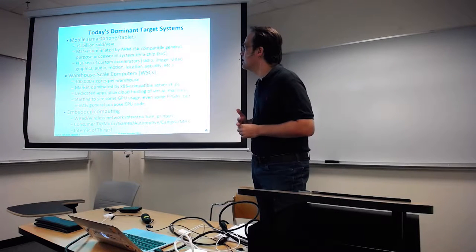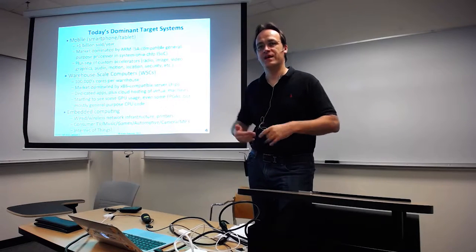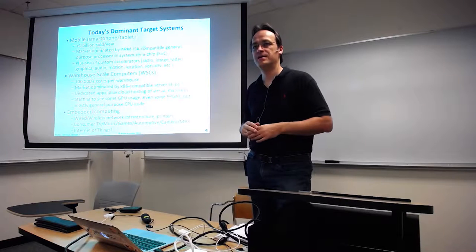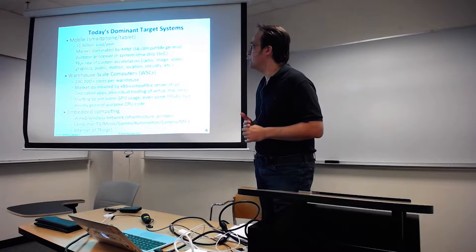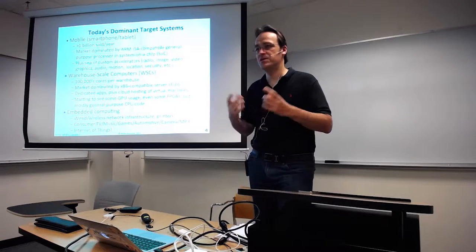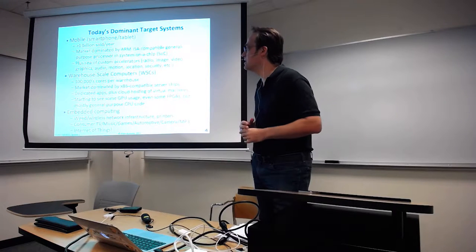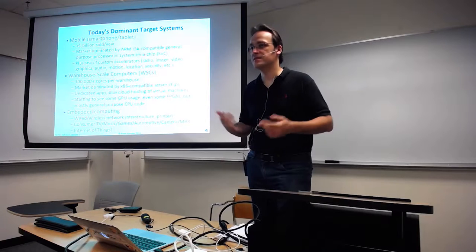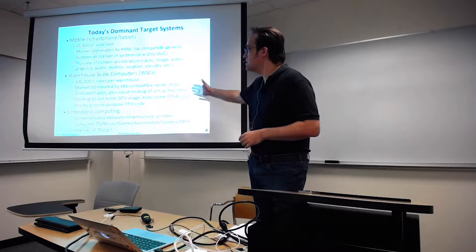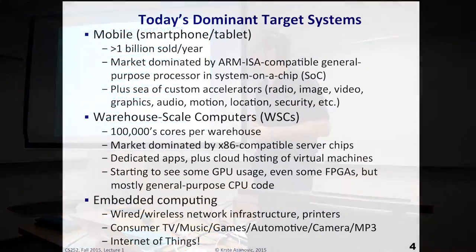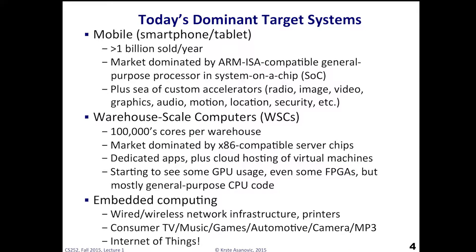The other extreme is warehouse-scale computers — the machines in the cloud. In a warehouse you'll have hundreds of thousands to millions of cores. This market is 99% dominated by x86-compatible chips, and over 90% of those are from Intel. There are some dedicated apps — for example, Google Search runs on their massive cluster. Amazon resells cloud computing capacity in the form of virtual machines; anybody can buy an instance running on Amazon's servers. You're starting to see cloud instances with GPUs attached for parallel computing, and even FPGAs — Microsoft is deploying FPGAs to accelerate their Bing search engine.